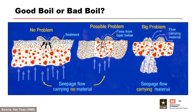Three potential conditions can be distinguished by the source of material deposited. At the left, seepage water is not transporting material as it passes through the surface deposits — the force of upward flow simply piles up finer grain surficial deposits, and there is likely no problem. In the middle, no material is carried by seepage water when it reaches the surface, but the upward flow is sufficient to remove finer materials from the surficial deposits — this is indicative of a possible problem. At the right, seepage is carrying material from the flow path, which is able to escape, implying average gradients are high — the threat of tapping into the impounded water is great, which is indicative of a potential big problem.